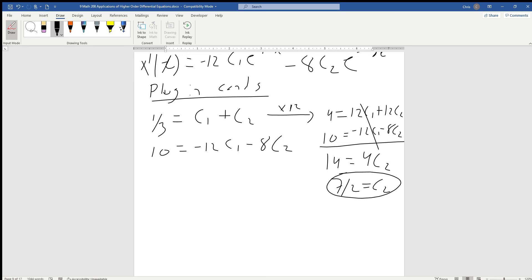We can back substitute. So one third equals c1 plus 7 halves. Looks like we're going to end up with negative 19 over 6. Let me verify using the calculator. Yes, it's negative 19 over 6.